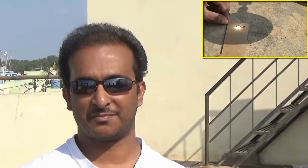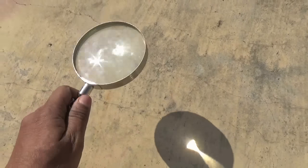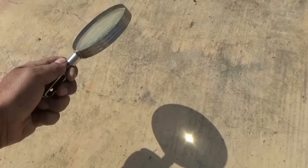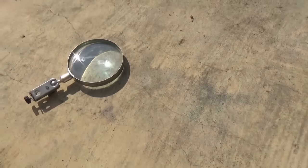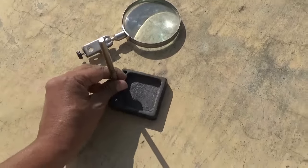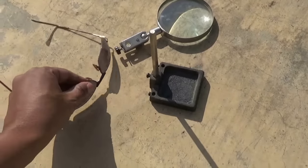Hi guys, welcome to another solar project. We'll make a very simple solar engraver. For this you need a convex lens. This lens converts the solar energy to its focal point. To hold the lens you need a stand.